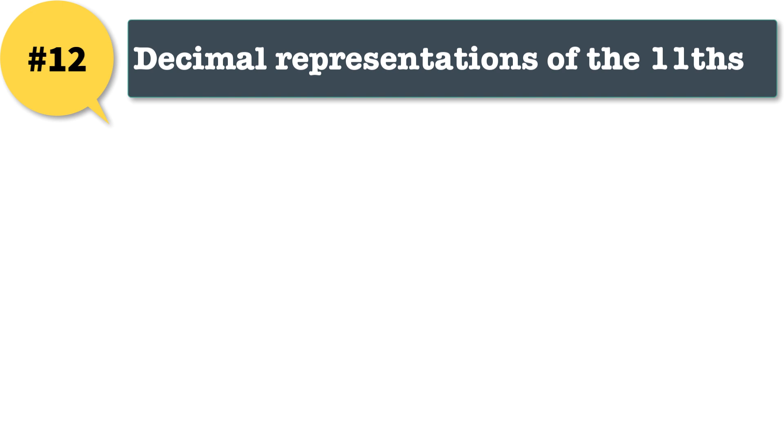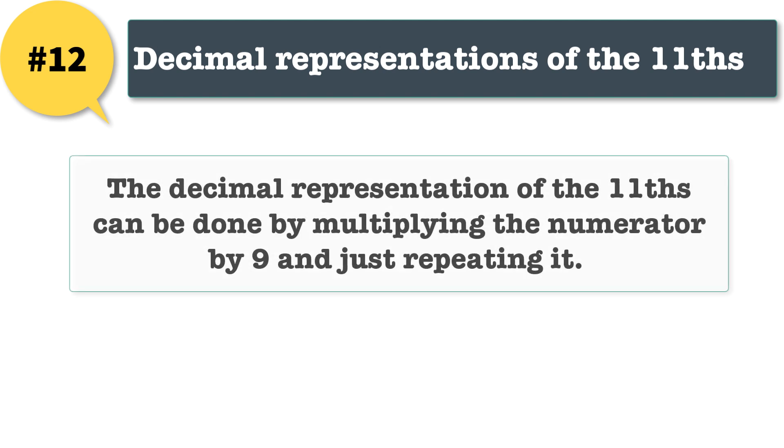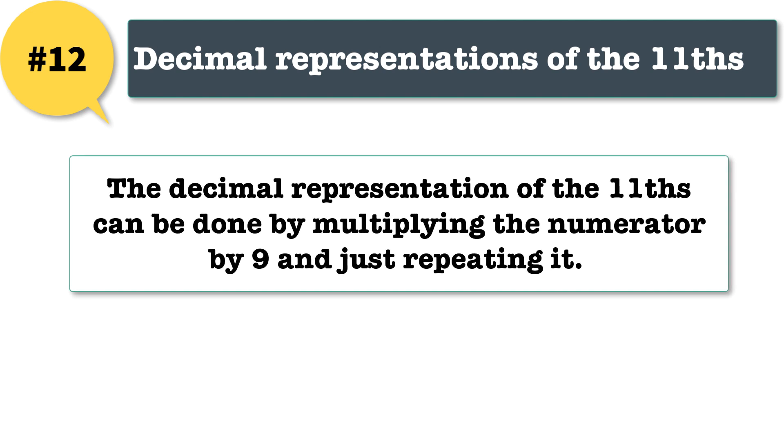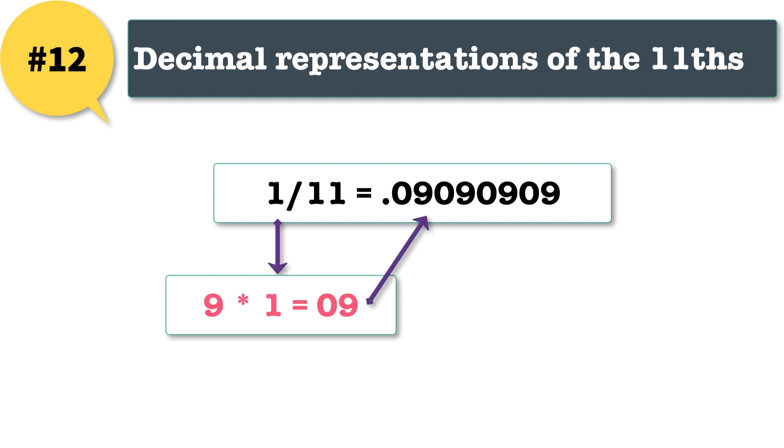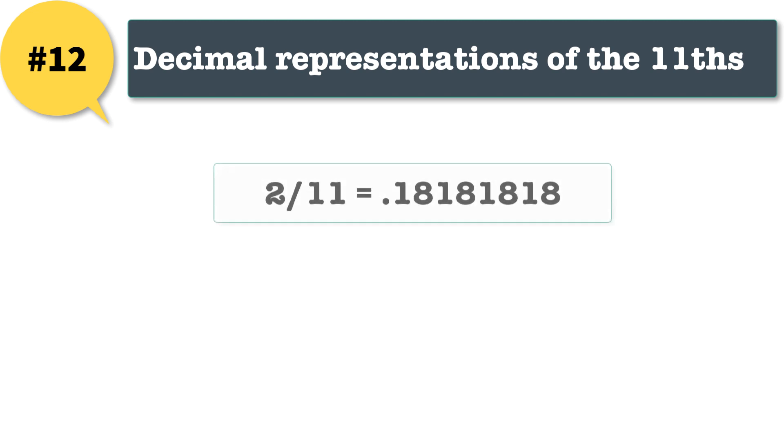12: decimal representations of the elevenths. The decimal representation of the elevenths can be done by multiplying the numerator by 9 and just repeating it. For example, in 1 by 11, multiply numerator with 9 which is 09, repeat this number after decimal point. Consider one more example, in 2 by 11, multiply numerator with 9 which is 18, repeat this number after decimal point. That's it, very simple trick.